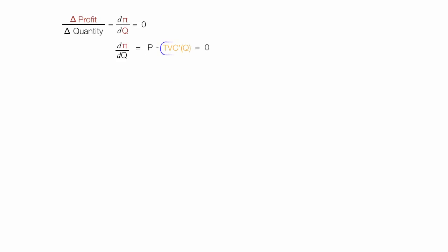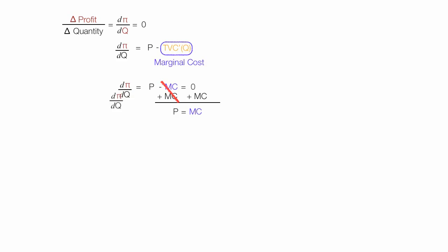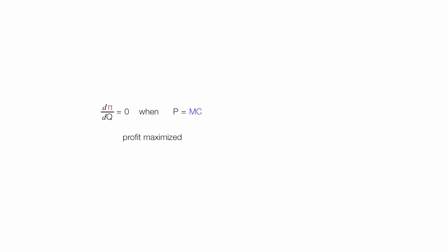Now I set this equal to zero and solve. The first derivative of the total cost curve is marginal cost. So I have: price minus marginal cost equals zero. Adding marginal cost to both sides, those terms cancel, and P equals marginal cost. So the first derivative equals zero when price equals marginal cost — and we conclude profit is maximized at this point.